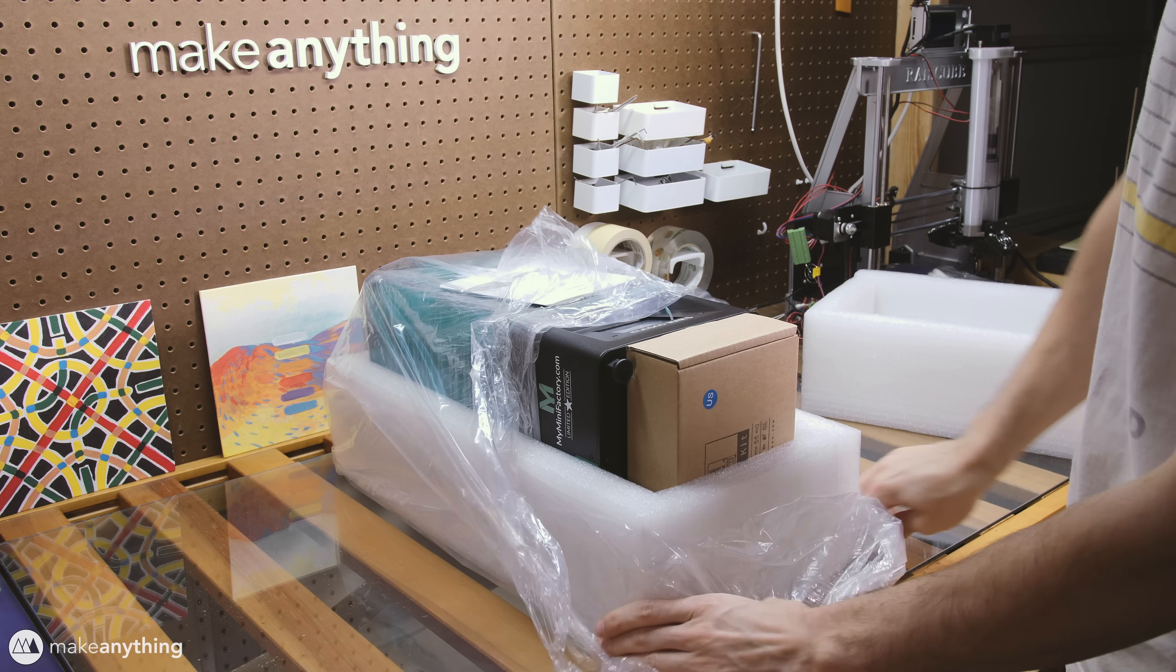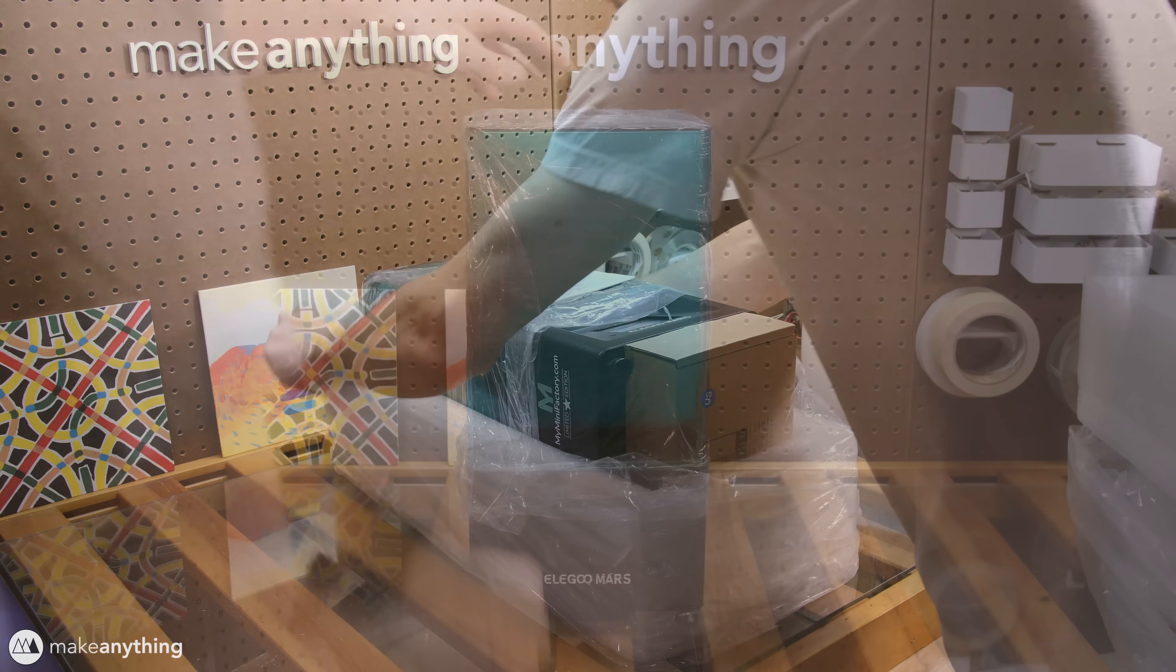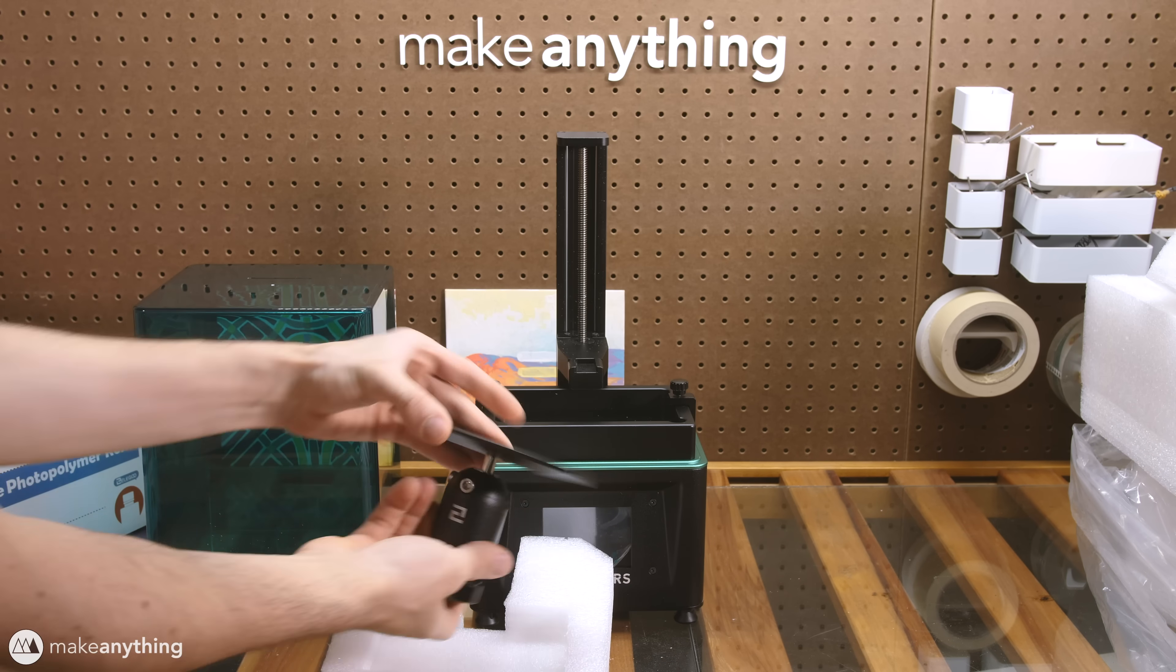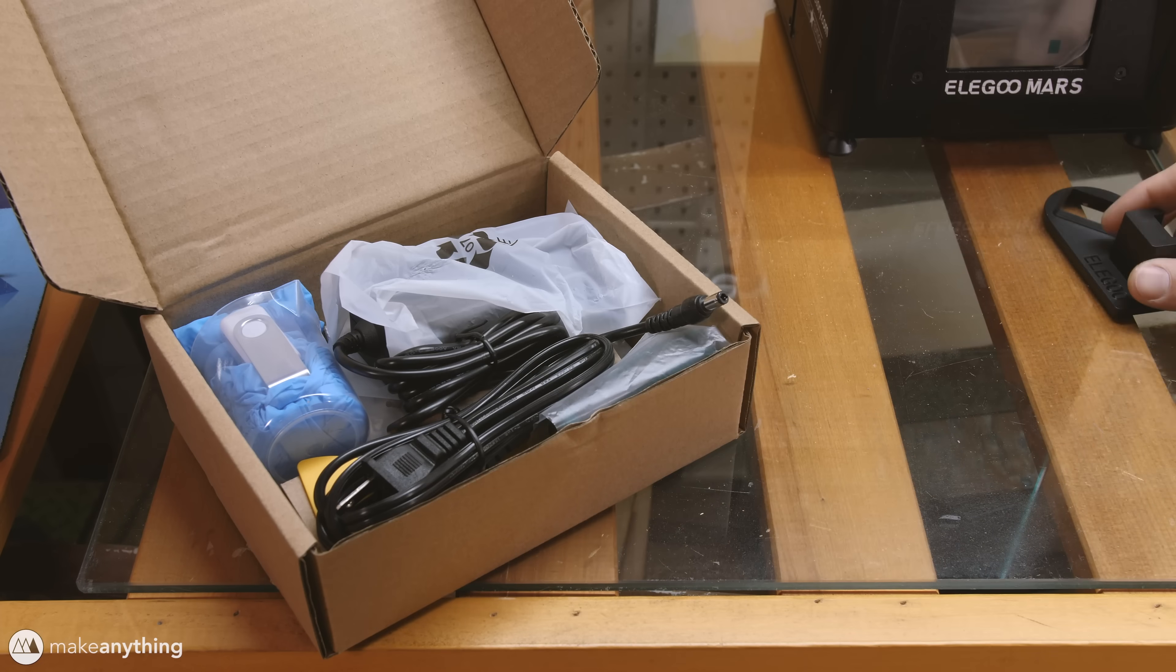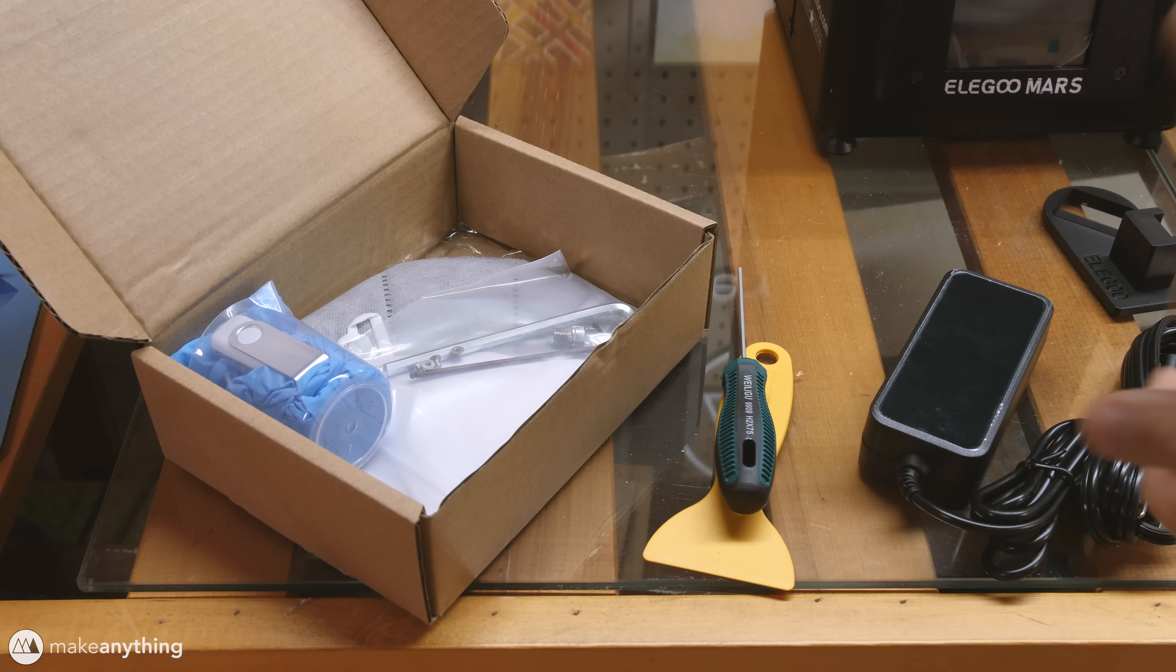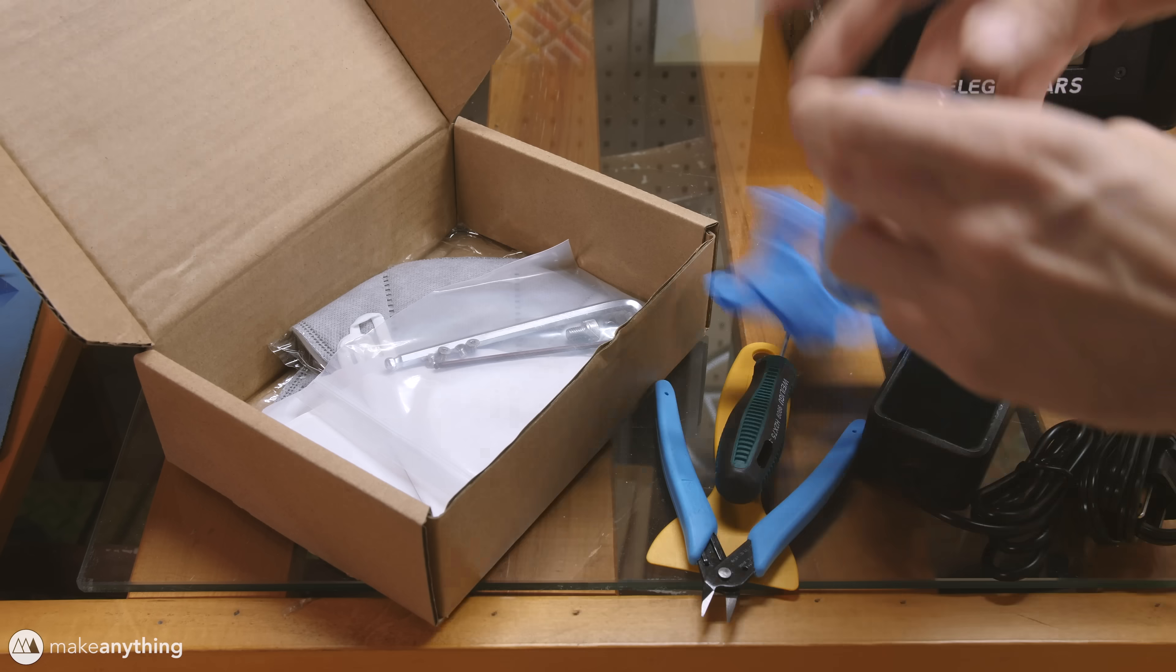The first awesome thing about this printer is that it comes pretty much completely assembled. Remove a bit of protective foam and we're ready to go. We've also got this little box of accessories to help us get started. It has tools like the scraper, flush cutters.